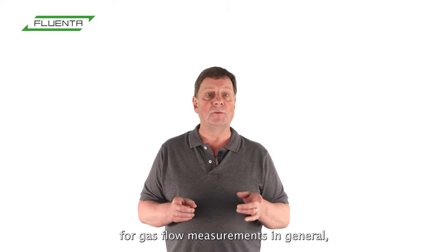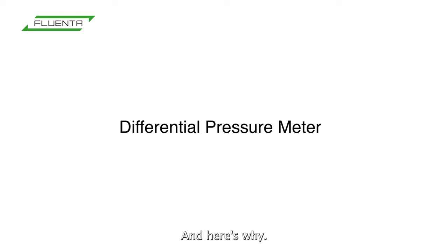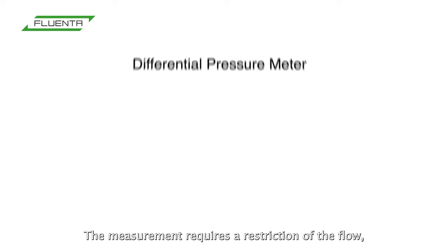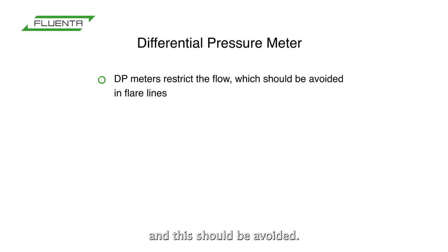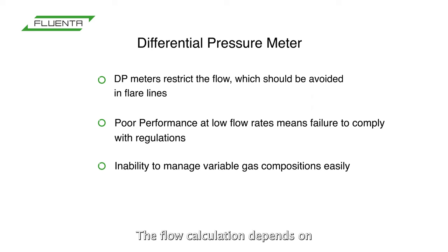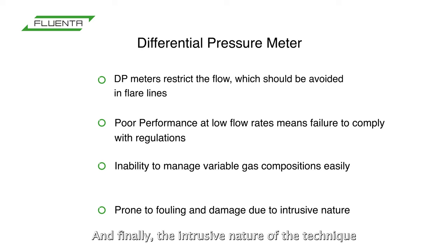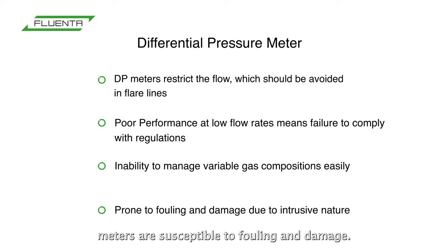While this technology is a popular choice for gas flow measurements in general, it's not always suitable for flare gas measurement. The measurement requires a restriction of the flow, and this should be avoided in flare lines. Poor performance at low flow rates means that the accuracies required by legislation cannot be met. The flow calculation depends on gas density and hence gas composition, so varying gas compositions as found in flare lines are a challenge. The intrusive nature of the technique means that differential flow meters are susceptible to fouling and damage.